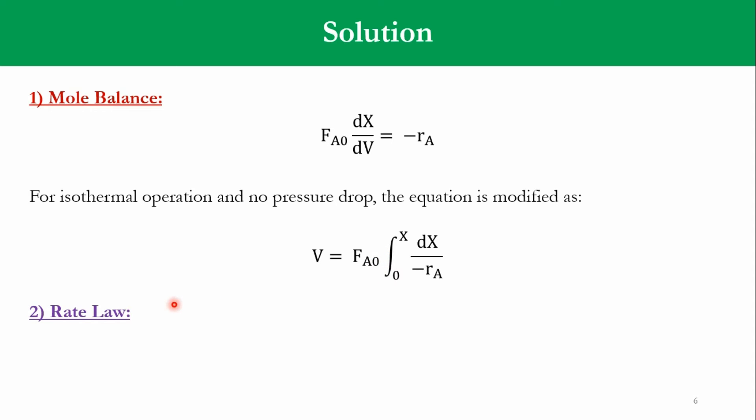Then the second step is the rate law, minus Ra is equal to KCA, elementary and irreversible. But K is 0.072 per second at 1000 Kelvin while E of A is 82 kilocalories per gram mole. We have to further go for the scale in our upcoming steps. But continuing with our algorithm, the third step is stoichiometry.